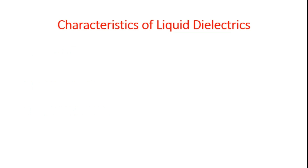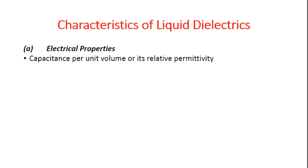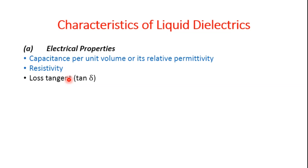Coming to the characteristics of liquid dielectrics: they should possess good dielectric properties, excellent heat transfer characteristics, and must be chemically stable under a range of conditions under which the equipment operates. We will briefly discuss electrical properties, heat transfer characteristics, and chemical stability. For electrical properties, the essential parameters are capacitance per unit value — or relative permittivity — then resistivity, and loss tangent or power factor.